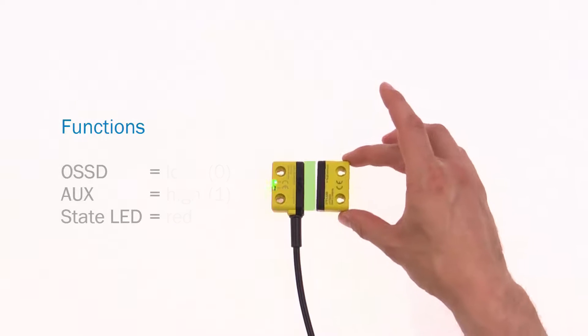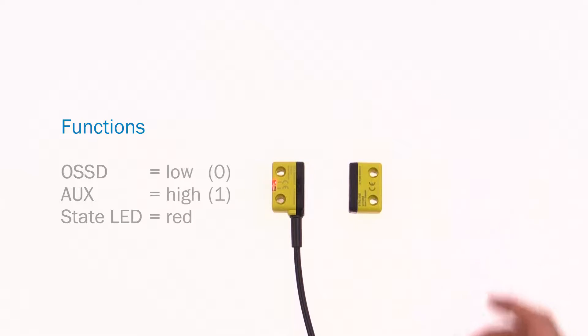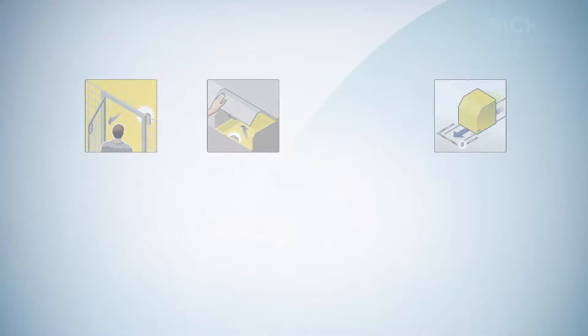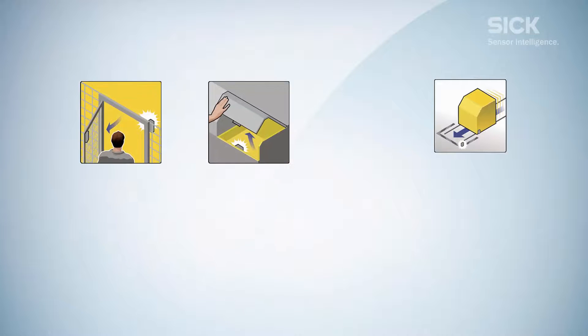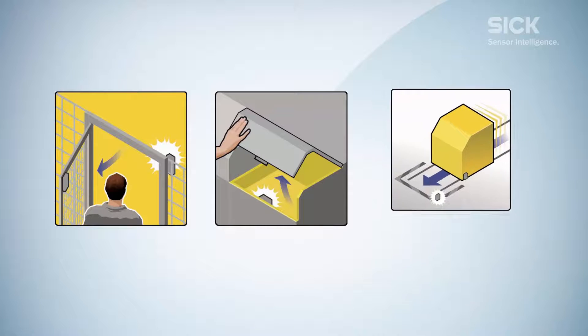The OSSD outputs switch to high only when a valid actuator is identified within the operating range of the sensor. This can be used to monitor the state of protective doors, opened or closed, or for safe position monitoring.